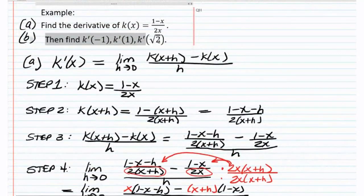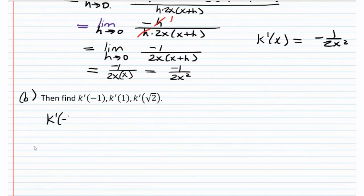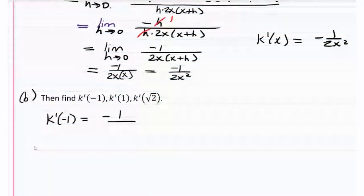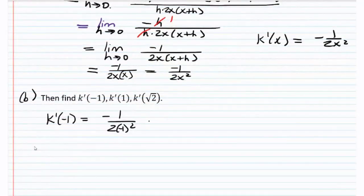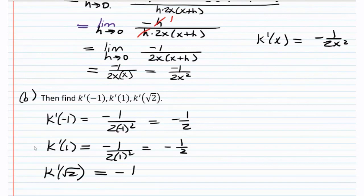And for part b, we want to find these values. k prime of negative 1 is going to be negative 1 over 2 times negative 1 squared, so negative 1 half. k prime of 1 is going to also be negative 1 half. And k prime of the square root of 2 is going to be negative 1 over 2 times square root of 2 squared, so that's going to be negative 1 fourth.